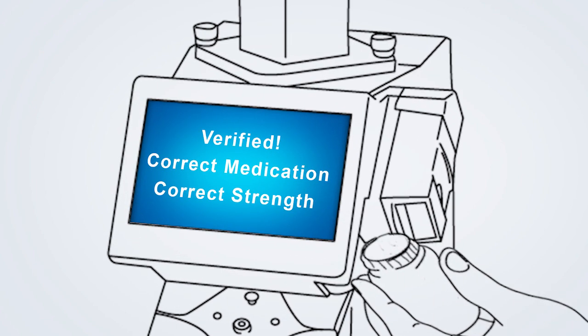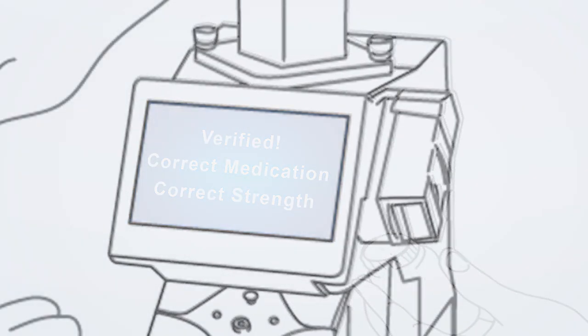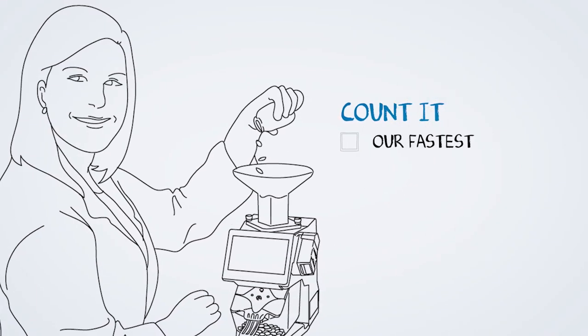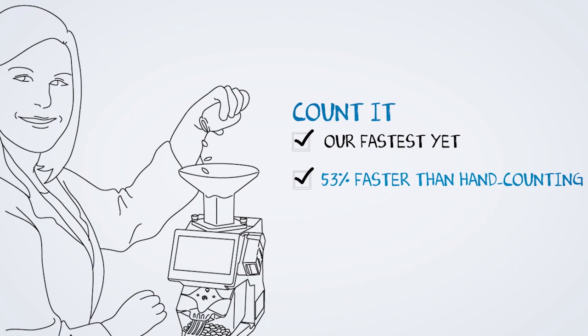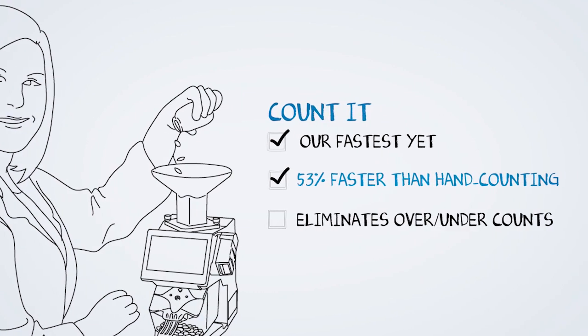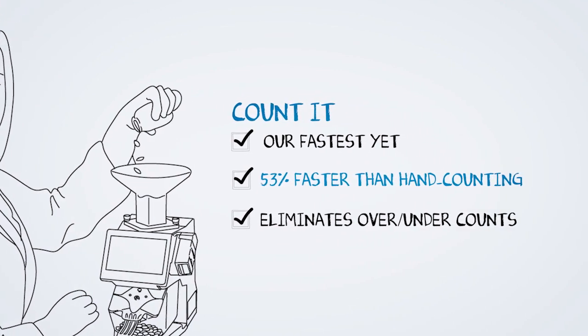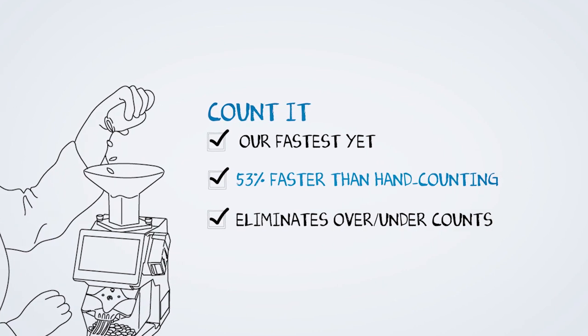Counting has never been easier or faster. Stock bottle inventory or 90-day fills are no longer a chore, and you'll never mistake a 30 count for a 60 or 90. The KL1 Plus eliminates over and under counts.